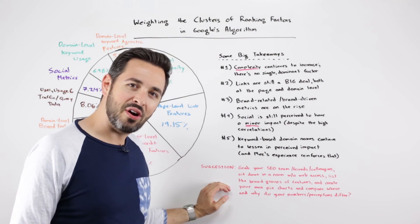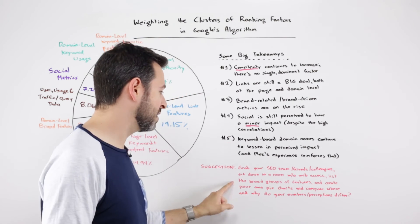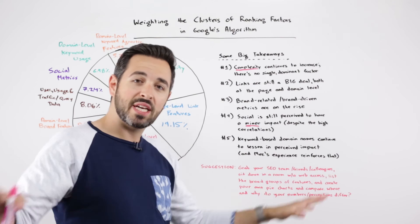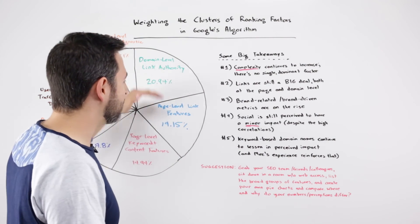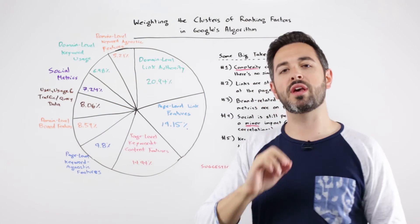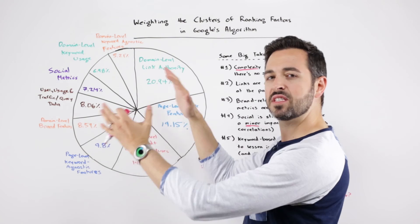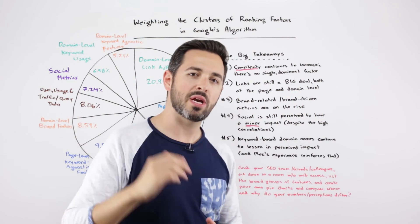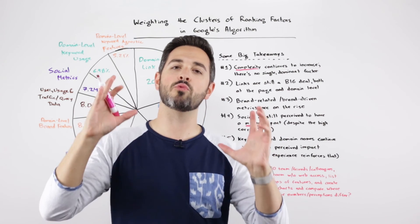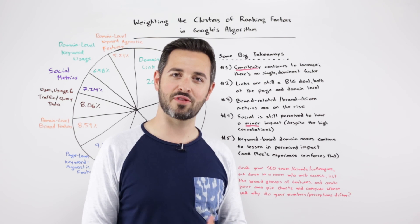My recommendation: go grab your SEO team or SEO colleagues, sit down in a room with a whiteboard or pen and paper — don't take a laptop in, don't use your phones. List out these features and go do this yourself. Try making these percentages for what you think the algorithm actually looks like, what your team thinks it looks like, and then compare. What's the difference between the aggregate of these numbers and the perception you have personally or as a team? I think it can be a wonderful exercise that opens up a great dialogue, and it's some fun homework if you get a chance over the next week.